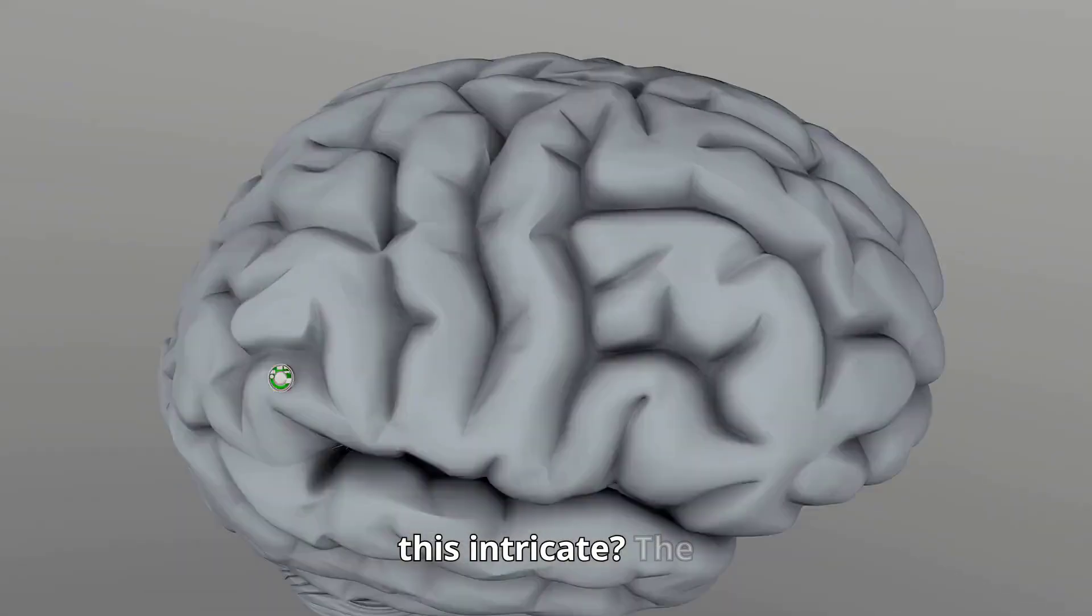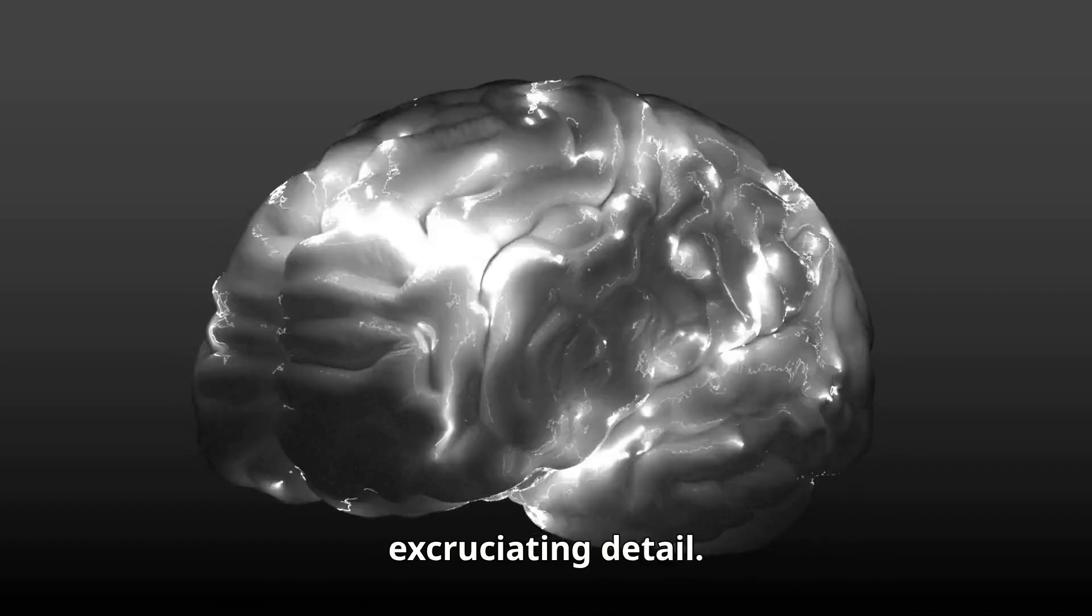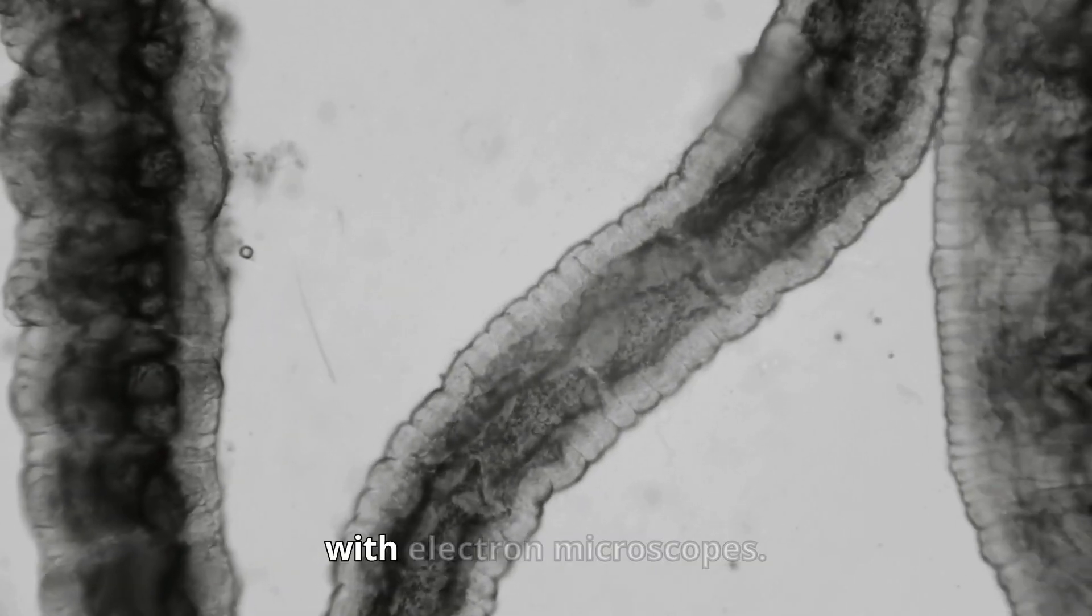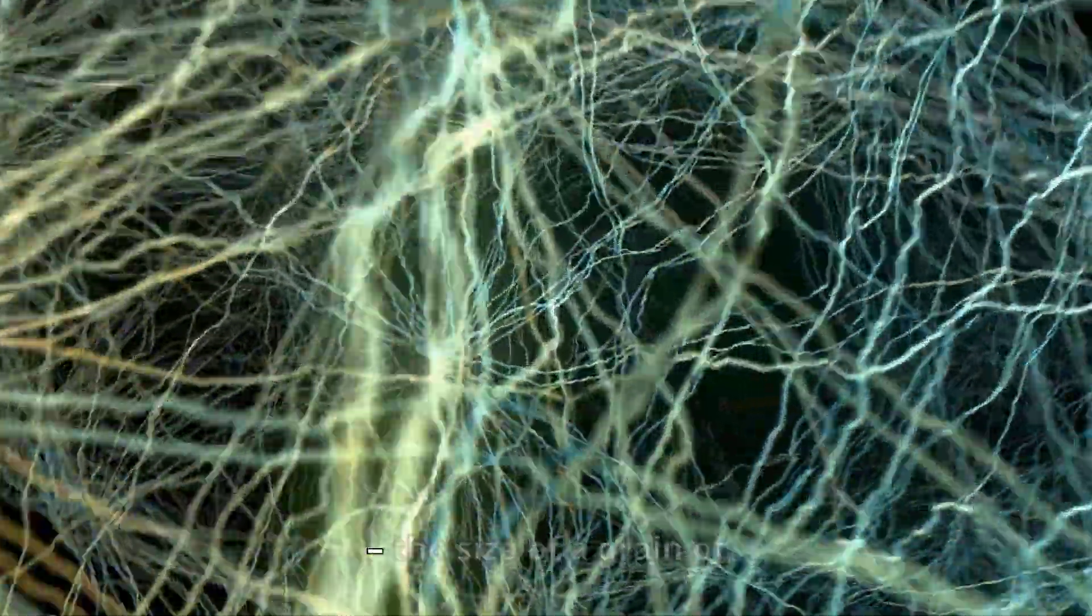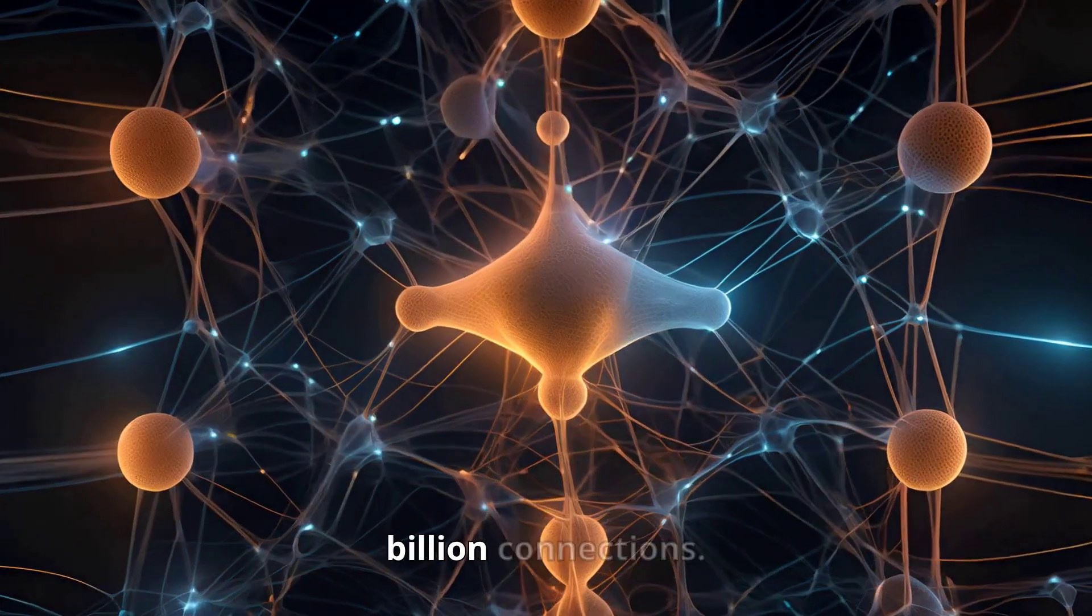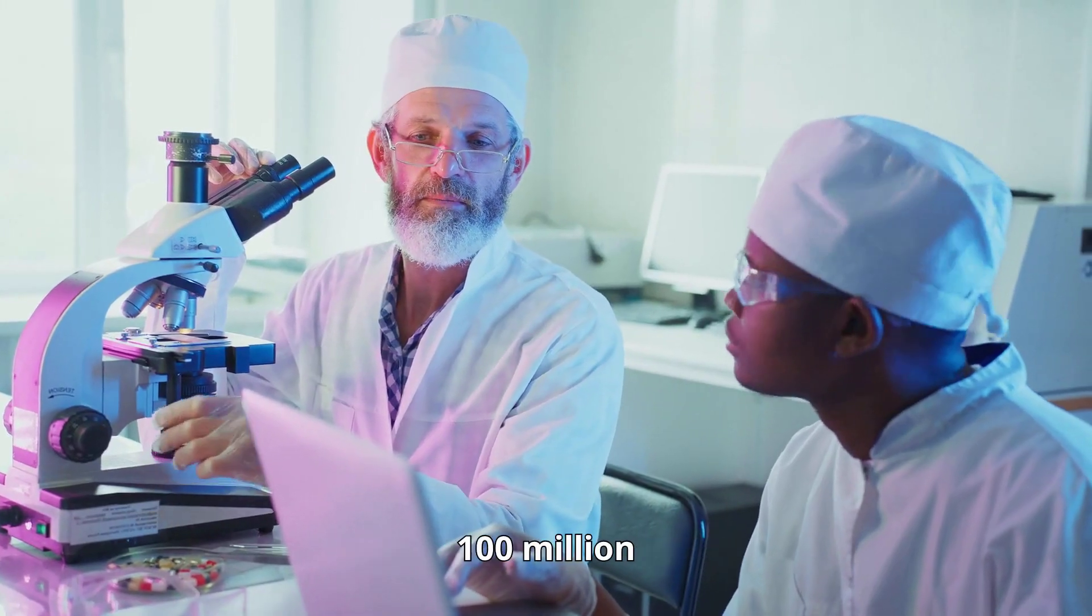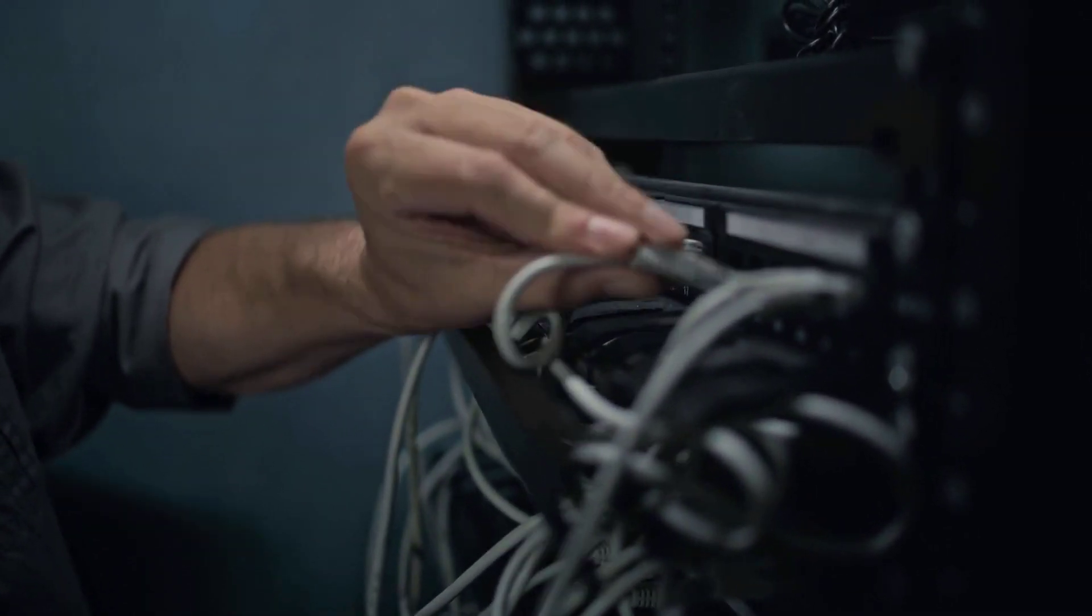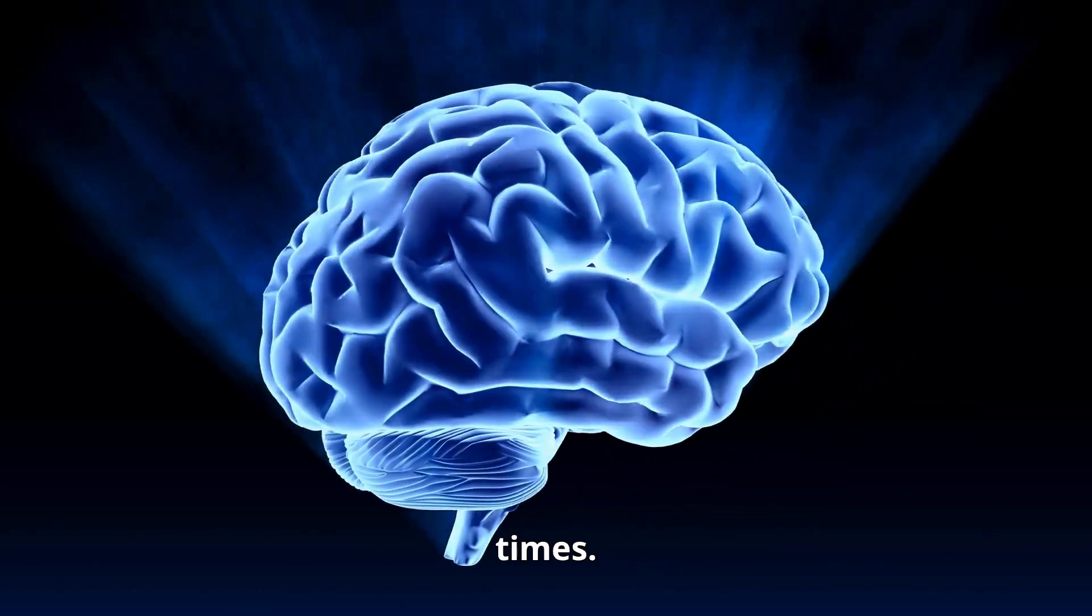So how do we copy something this intricate? The answer lies in one of science's most ambitious projects, mapping the brain in excruciating detail. Scientists slice brains into thousands of paper-thin sections and scan each one with electron microscopes. In 2020, researchers mapped just one cubic millimeter of mouse brain the size of a grain of sand. This tiny piece contained 100,000 neurons and a billion connections. It took five electron microscopes running for five months, generating over 100 million images, with the final dataset filling 2 million gigabytes of storage. To map a complete human brain, we'd need to repeat this process over a million times. And that's just the beginning.